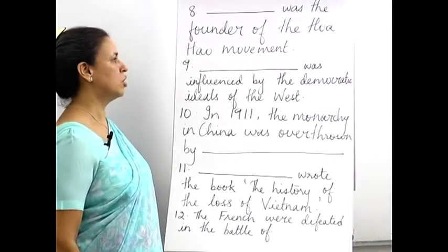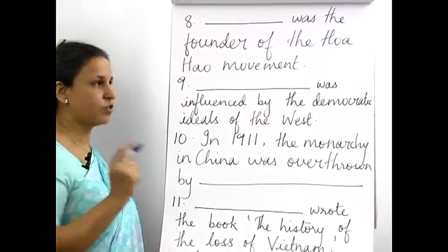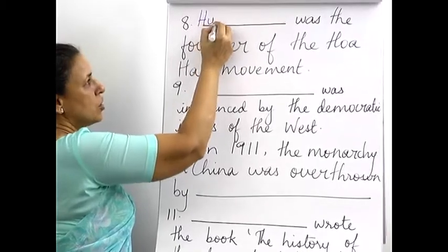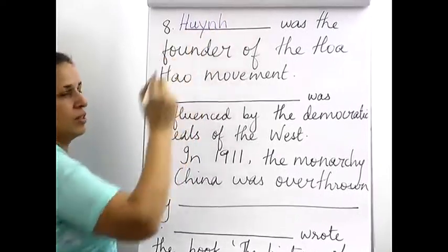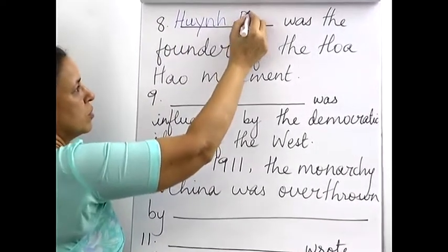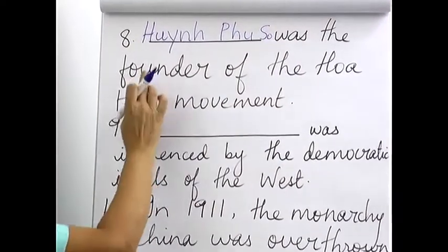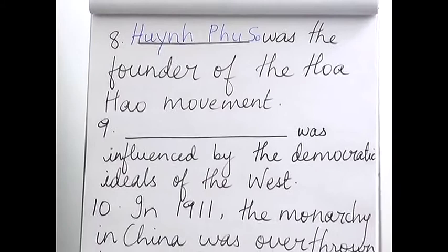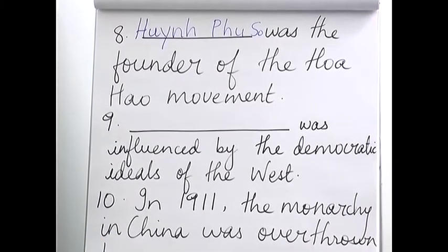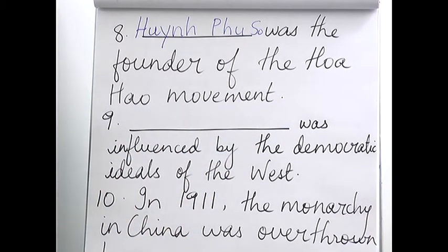Eighth: someone was the founder of the Hoa Hao movement. Be careful of the spelling and write it very carefully. If they ask who founded the Hoa Hao movement, or which movement did he found, you should know the answer whichever way they ask.